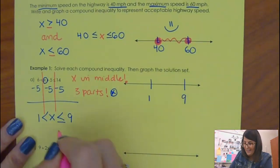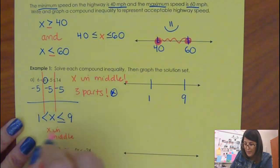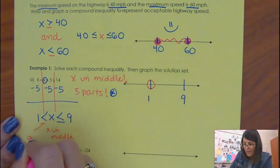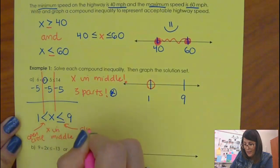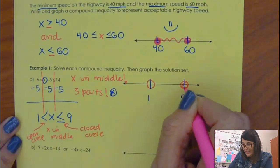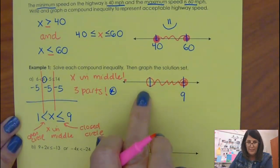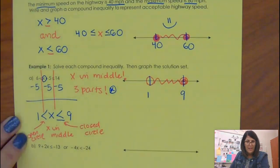And the X is in the middle. If I'm graphing it like this and X is in the middle, then it is between the 1 and the 9. It does not include the 1, that is an open circle, and that, because it's got the equal sign, that is a closed circle. It is the 9 and all the stuff in the middle, not the 1, but everything in the middle.